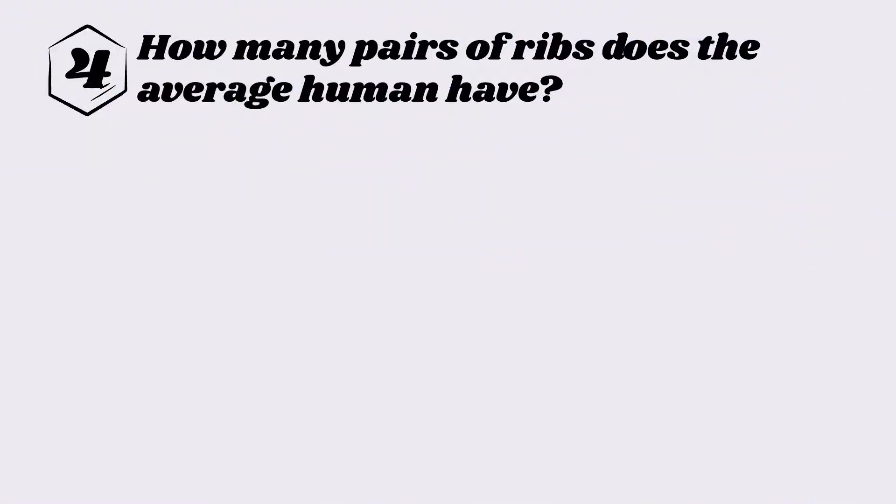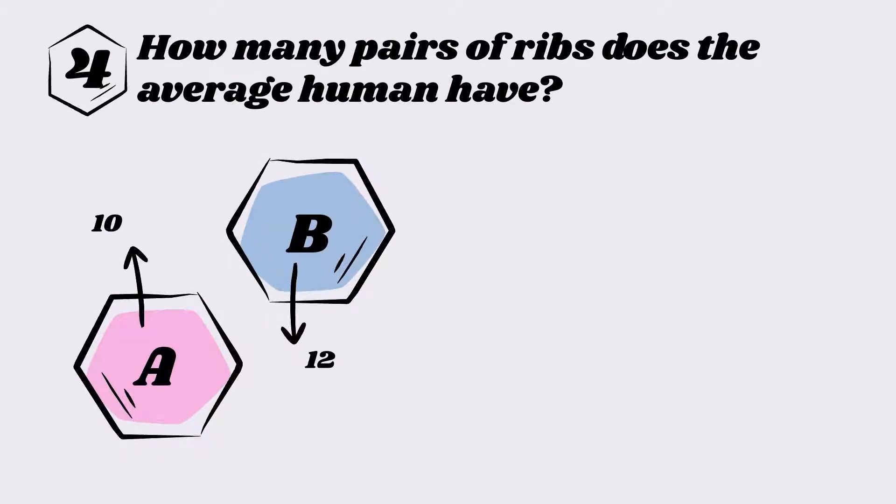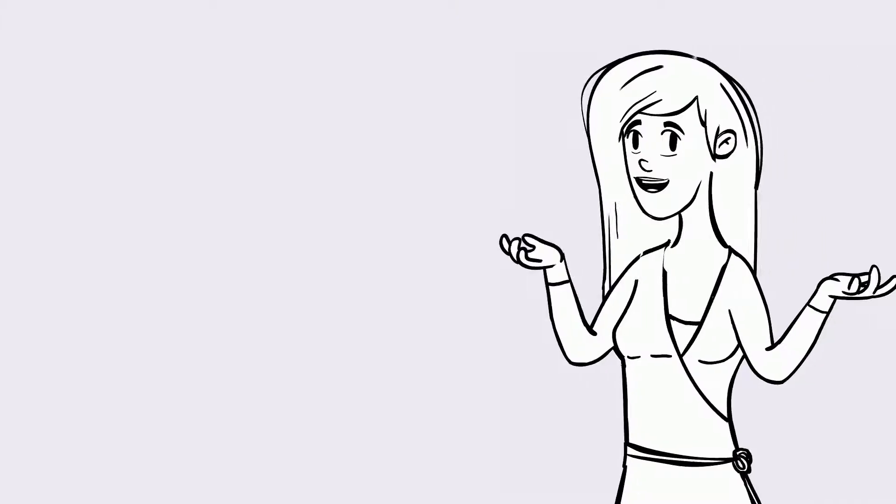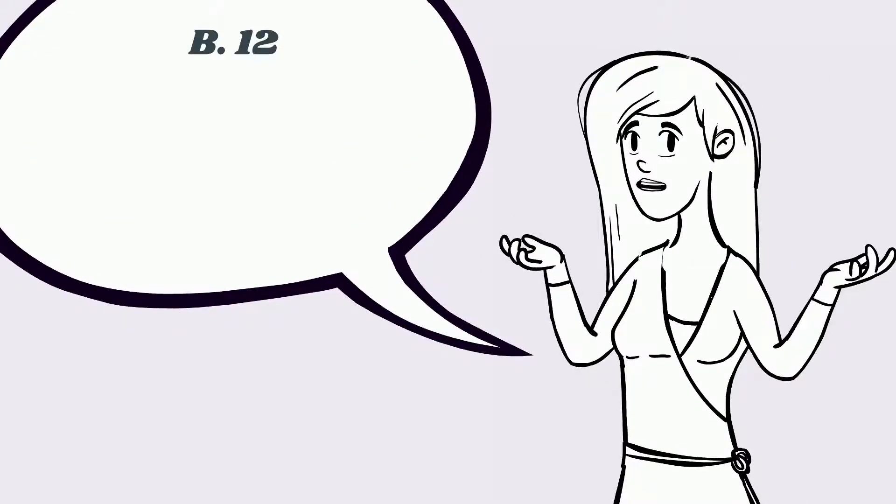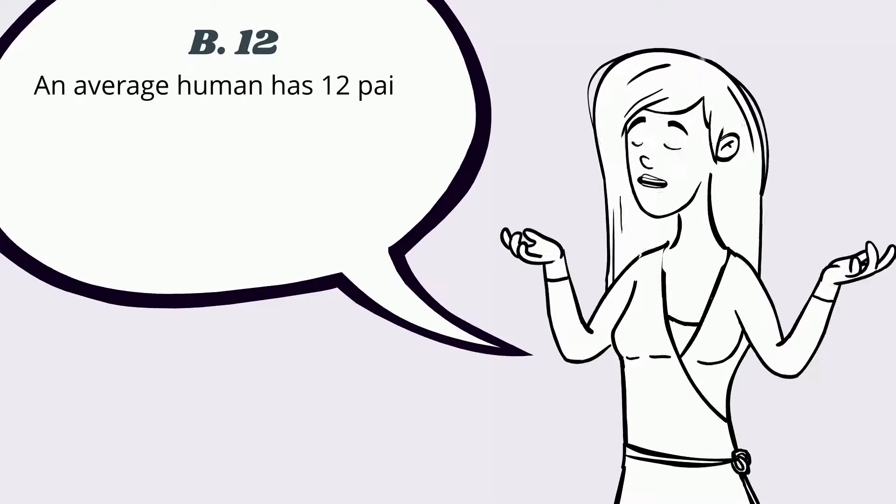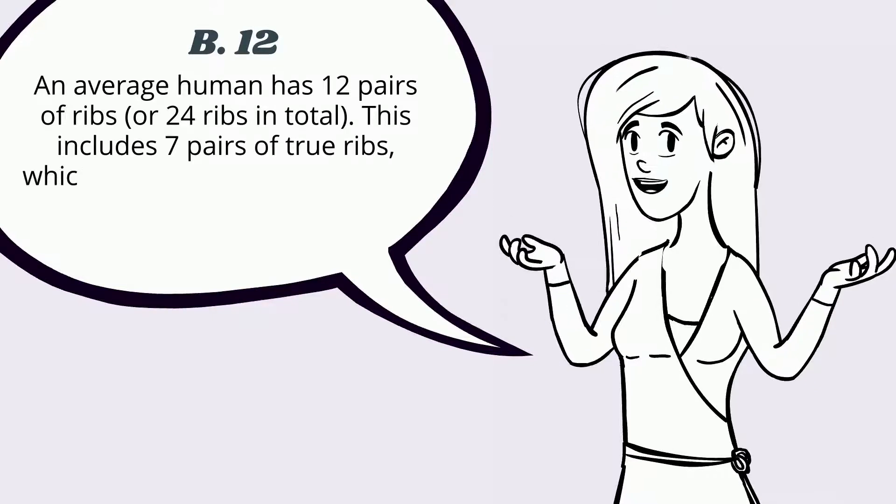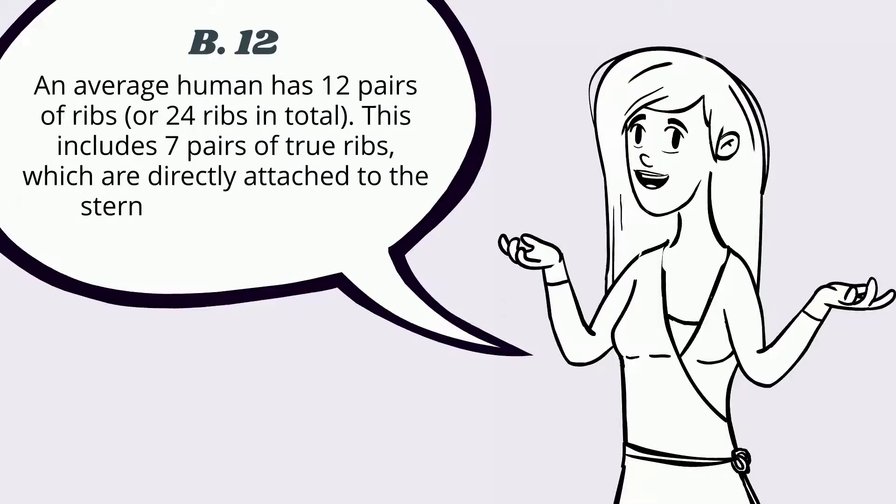Question four: How many pairs of ribs does the average human have? A) 10, B) 12, C) 18, D) 22. The answer is B, 12. An average human has 12 pairs of ribs, or 24 ribs in total. This includes seven pairs of true ribs, which are directly attached to the sternum, or breastbone.